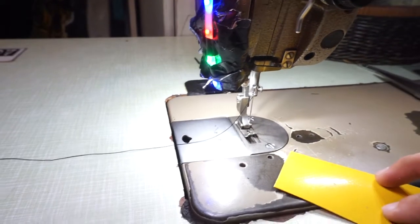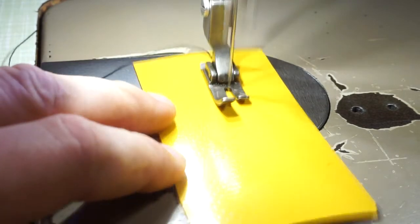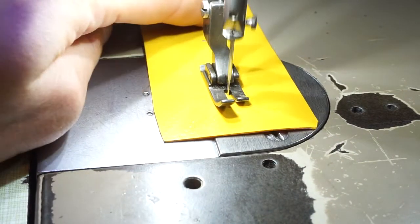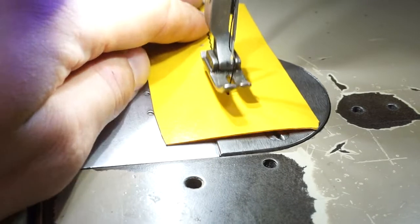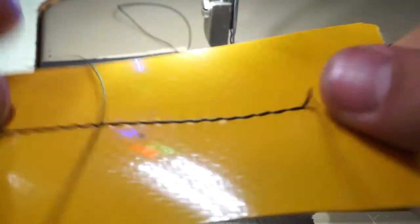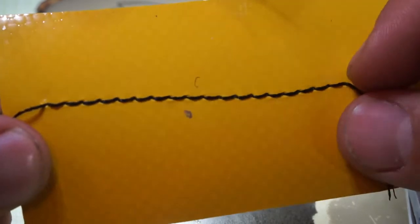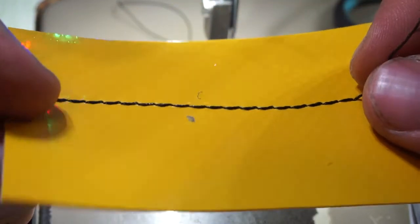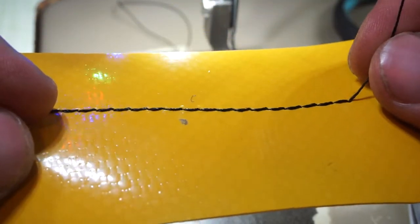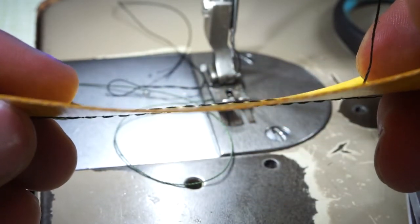To determine the correct thread tension, when you start sewing, this is our top thread tension and you see that the knot of the thread is hidden inside the canvas. So this is the correct thread tension.